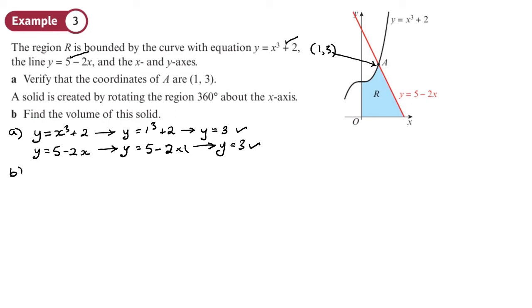Part B. Now what does it say just before part B? A solid is created by rotating the region 360° about the x-axis. Find the volume. We can find the volume of this area here and rotate that around. So that's 0, and this is 1. But then we're left with this bit here. When that's rotated 360 degrees, that's going to be a cone.